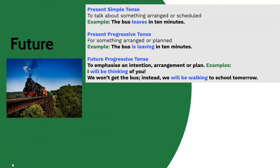Some of the tenses that we've studied can also be used to talk about the future. For example, the present simple tense can be used to talk about something that's arranged or scheduled. The bus leaves in 10 minutes. The present progressive tense can be talked about something that's arranged or planned. For example, the bus is leaving in 10 minutes. The main difference between these two sentences is that with the second one, you're imagining it happening in your head. This might be developing a feeling of urgency or panic.